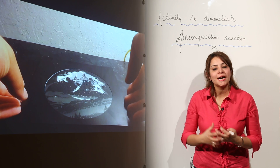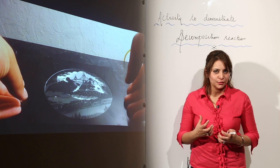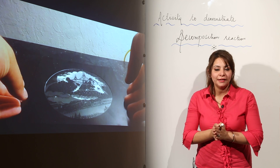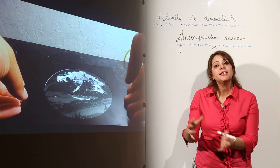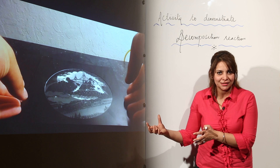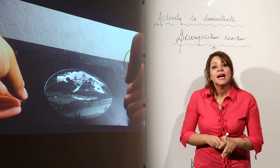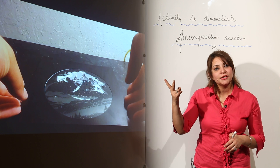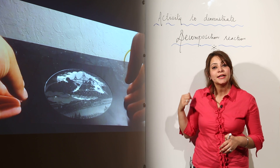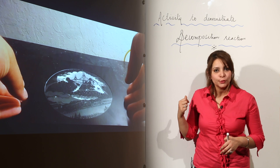We are going to start with an activity demonstrating an example of a decomposition reaction. A decomposition reaction is a reaction in which a compound splits into its constituents or simpler substances. A compound can split into simpler substances either by heating, in the presence of light, or by passing electric current. This activity will demonstrate decomposition in the presence of light.